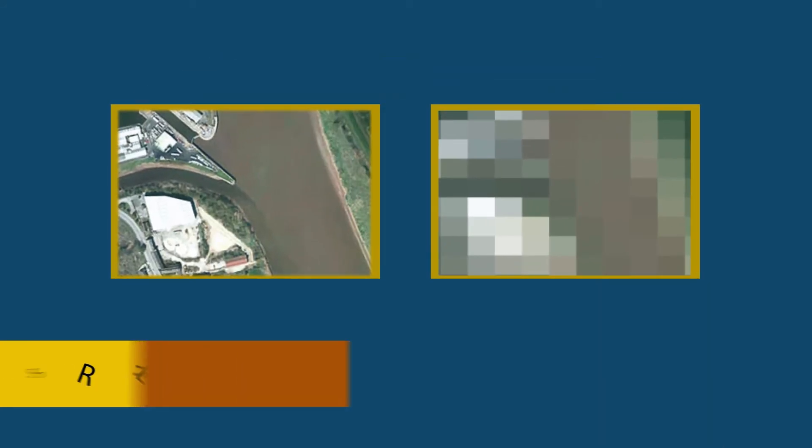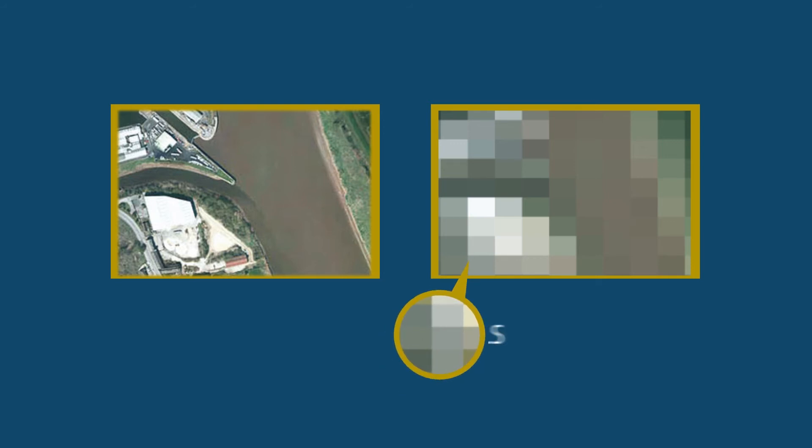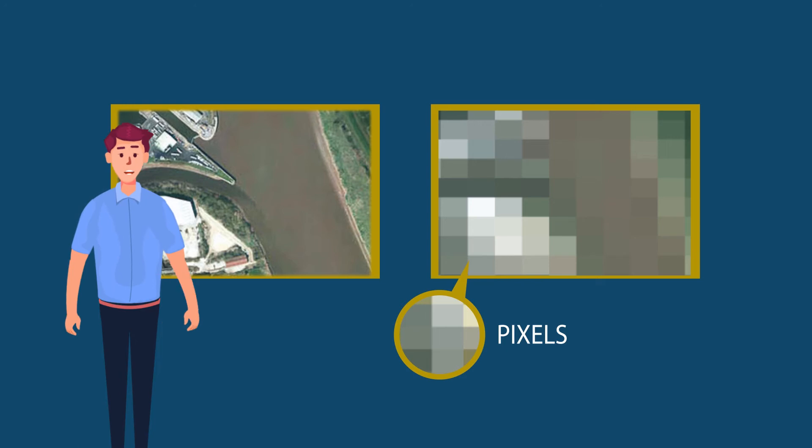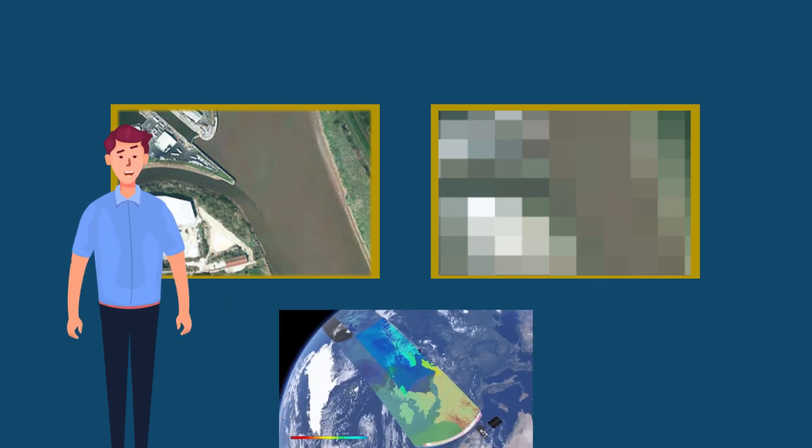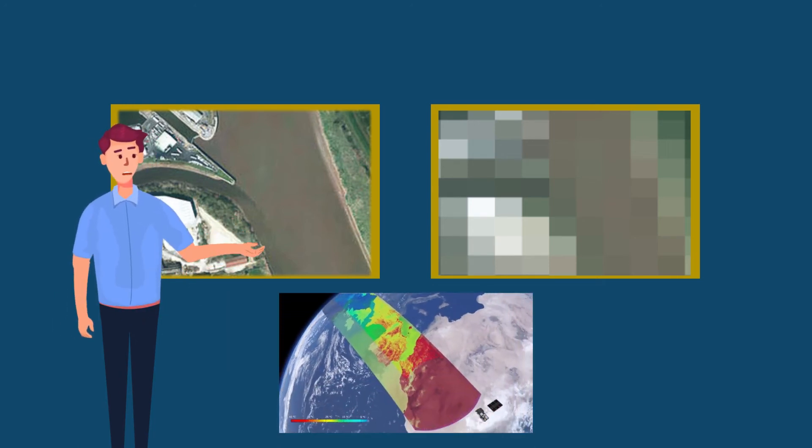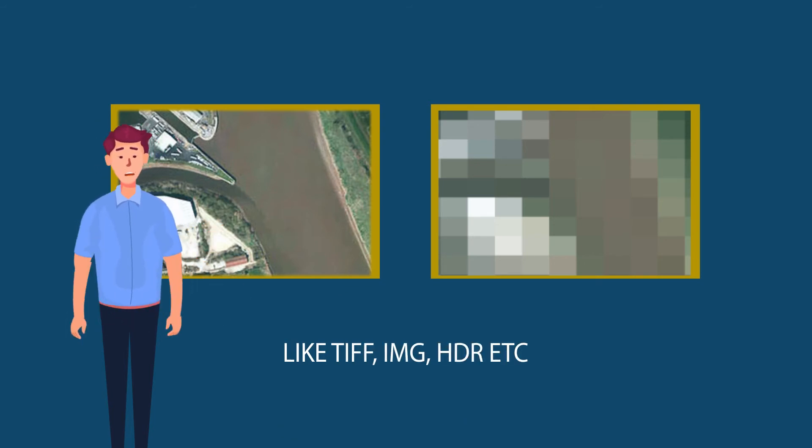In this model, area is divided into equal-sized cells, also called pixels. Attributes are recorded by assigning a value to pixels. Popular image formats to store raster data include TIFF, IMG, HDR, etc.